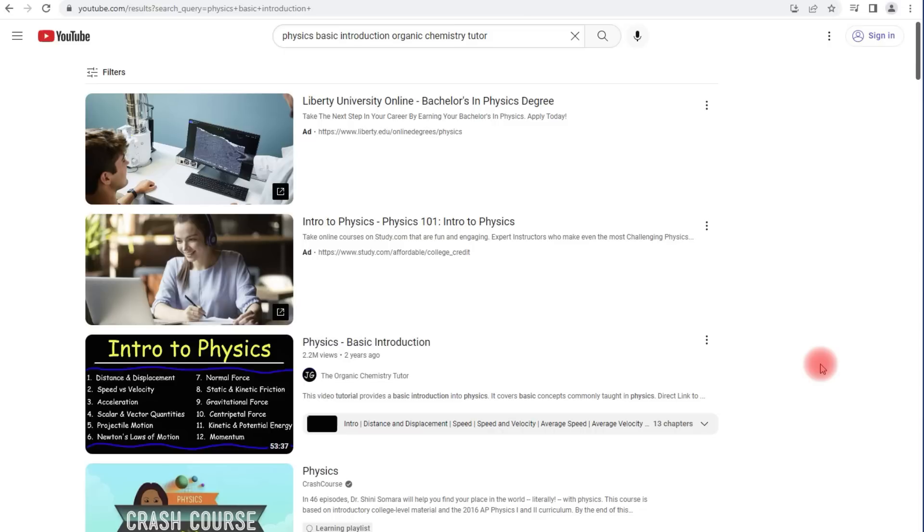Now, this video is going to give you a basic introduction to some key concepts that are taught in physics, like the difference between distance and displacement, speed and velocity. A key difference is velocity is a vector. It has magnitude and direction. Speed is not. Displacement is a vector. Distance is not. And there are some other key topics you want to know, like what's the difference between a scalar and a vector quantity? What is acceleration? What is projectile motion? What's Newton's first, second, third law? What's a normal force? What's static and kinetic friction? So, these are concepts that you're going to learn in the first semester of Physics.